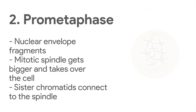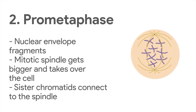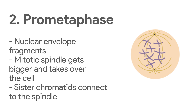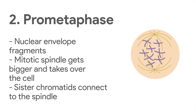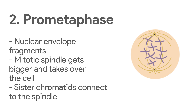During prometaphase, the nuclear envelope fragments and the mitotic spindle moves in, taking up a lot of space and growing much larger. Some special microtubules form connecting the sister chromatids to the spindle. These start to wiggle back and forth a little.